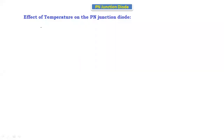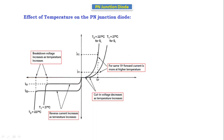Hello everyone, today we are going to discuss the effect of temperature on the PN junction diode. In the last class we discussed the V-I characteristics of the PN junction diode. Now, if we increase the temperature, how will the diode behave? Let's see the characteristics one by one. This is the V-I characteristics of the PN junction diode.